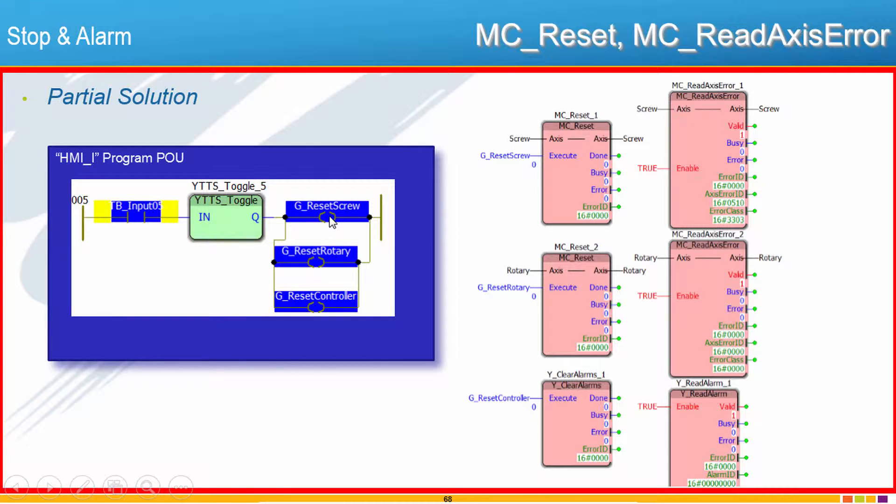The HMI POU has coils to reset the screw, the rotary and the controller. So there's the two real axes and the controller. PLCopen covers reading and resetting the axes, and those are the MC Reset, MC Read Axis Error. Again very simple blocks. You just give it the axis and tell it whether it should execute the reset, or whether it should enable the reading of the error. We'll typically set that to True if you just want that to constantly read the error.